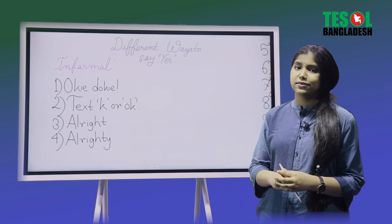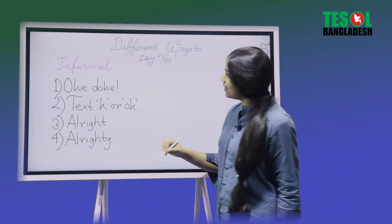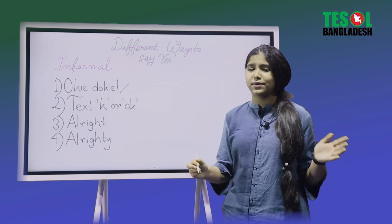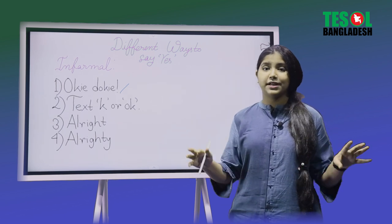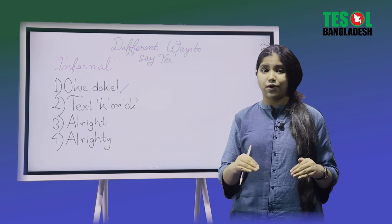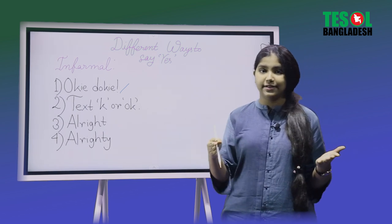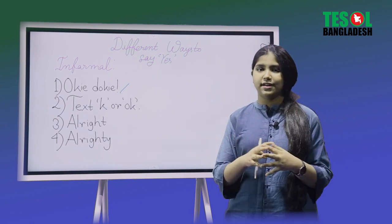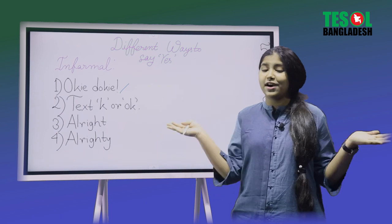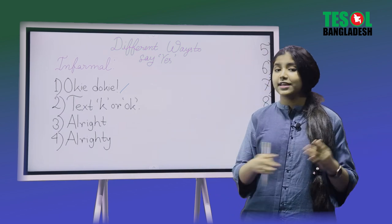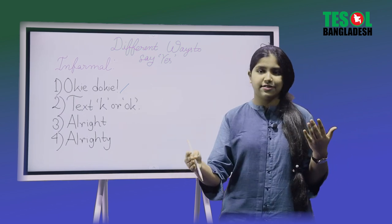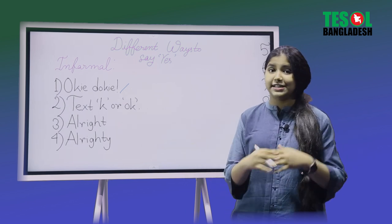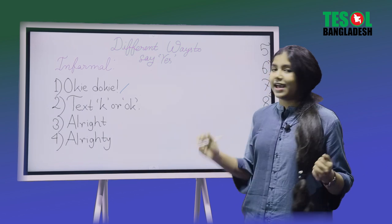Number one is okie dokie. Okie dokie is actually used when you are talking to a friend or a sibling of your age or less than your age, but not more than that, not elder than you. So someone asked you, do you want to go out for ice cream? And you say okie dokie, I will. If it's your friend, in case it's someone who is really close to you and with them you can talk informally, it is free.